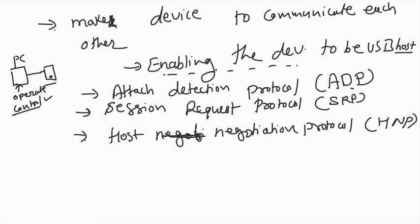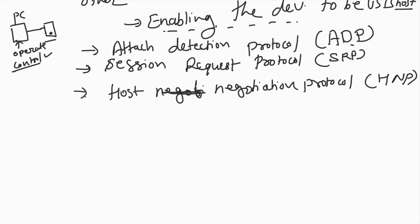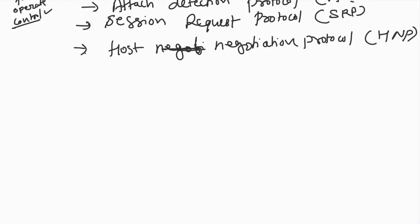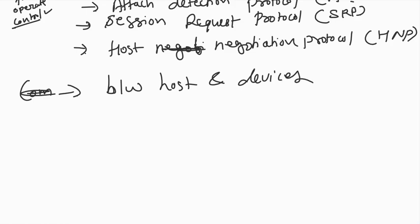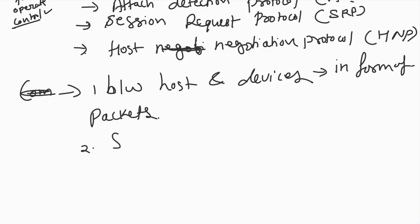So USB looks very simple — just four pins — but it handles many amazing things in many different ways. The communication protocol in USB is basically between host and devices, and data is transferred in the form of packets.